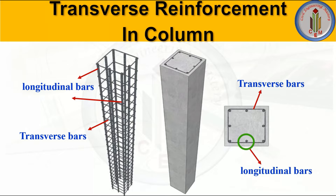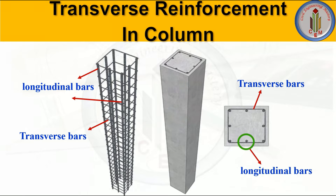A column is a compression member that carries the load coming from beams and slab. To resist this load, we provide longitudinal bars. The lateral ties are provided to hold the longitudinal bars in place — without them, the longitudinal bars would not stay in position. They also prevent buckling of the longitudinal bars. Additionally, transverse bars are mainly meant to resist the shear force acting on the column.